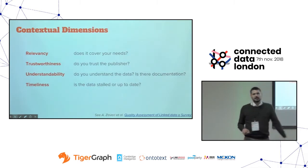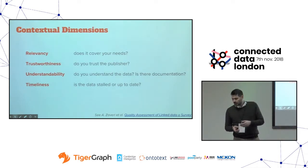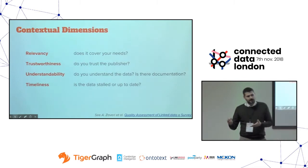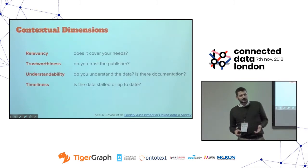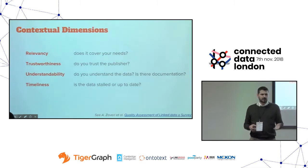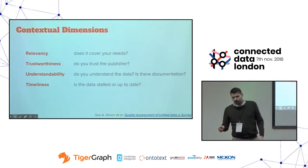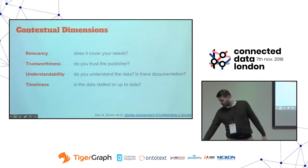Contextual dimensions are about whether the data is relevant for your use case. Can you actually use them? Does it cover your application? Do you trust the publisher? Maybe they're good enough for this kind of data but not for another. Do you understand the format? Is there documentation? And of course, freshness — is the data stored or up to date? This is quality as well.